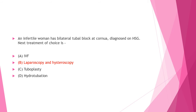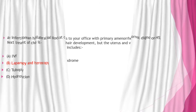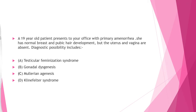Next question: A 19-year-old patient presents to your office with primary amenorrhea. She has normal breast and pubic hair development but the uterus and vagina are absent. The diagnostic possibility includes — Option A: testicular feminization syndrome, Option B: gonadal dysgenesis, Option C: Mullerian agenesis, Option D: Klinfeltral syndrome. Answer is Option C: Mullerian agenesis.